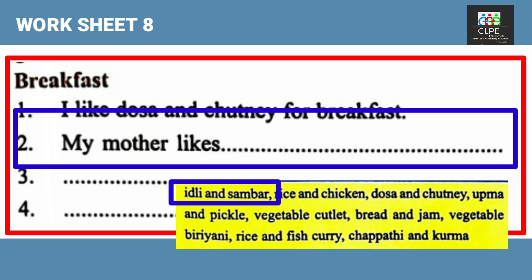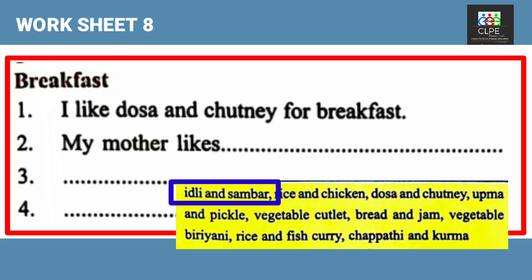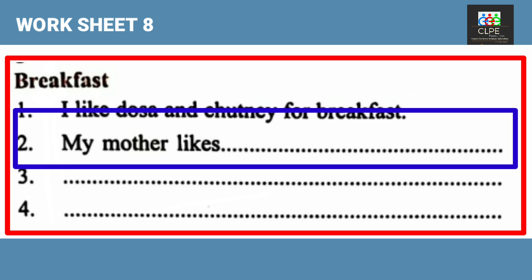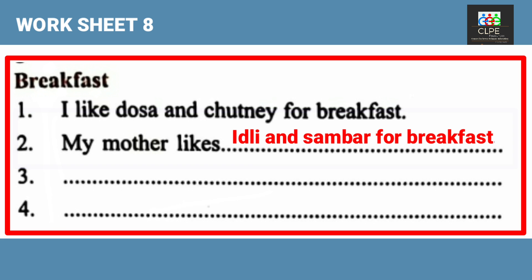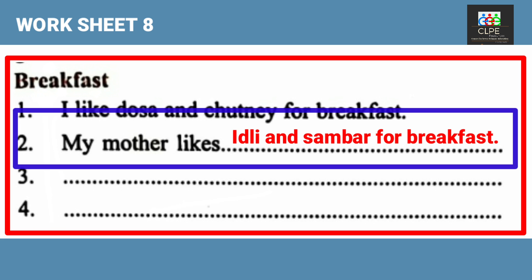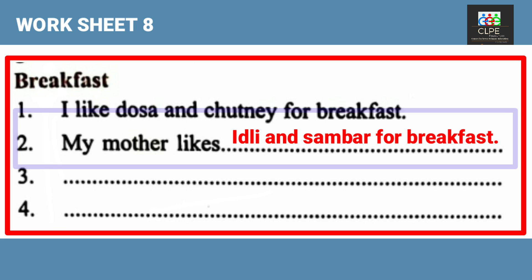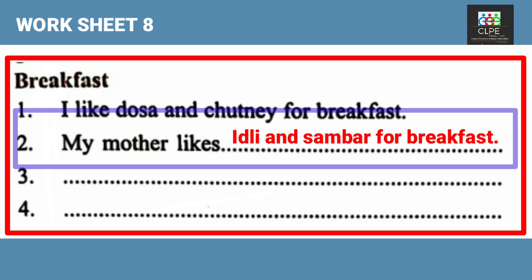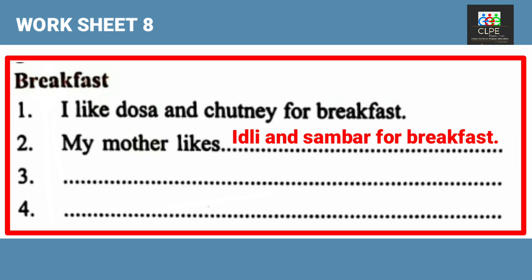For breakfast, we can write: 'My mother likes idli and sambar for breakfast.' This is the sentence for breakfast about mother. Now let's do the third sentence.